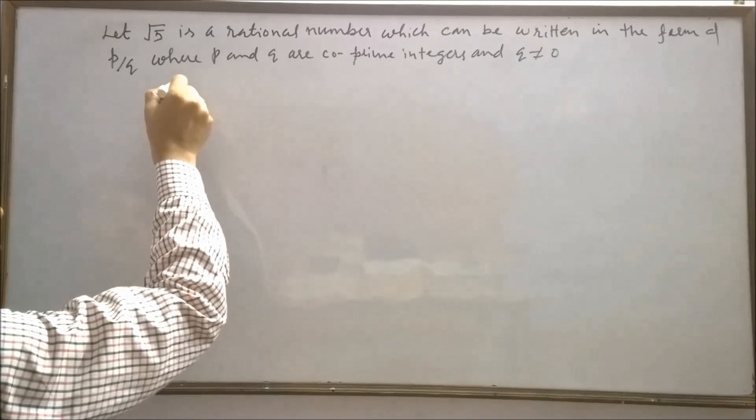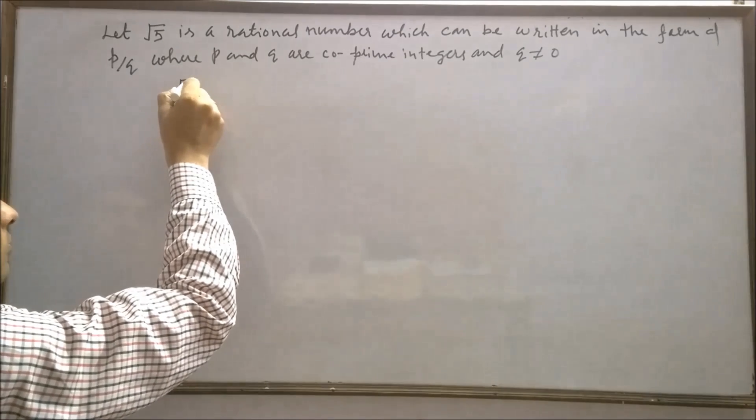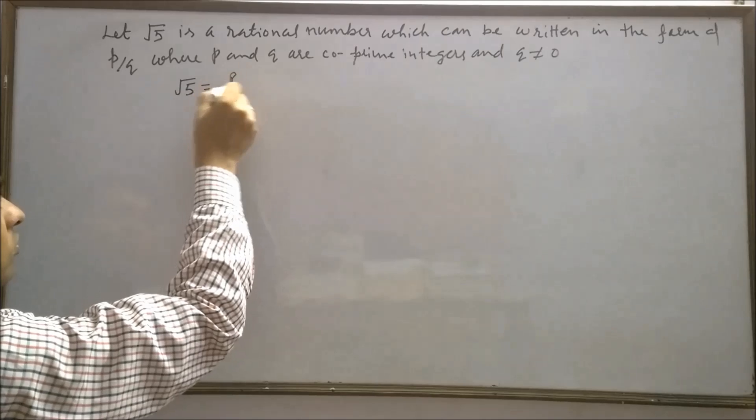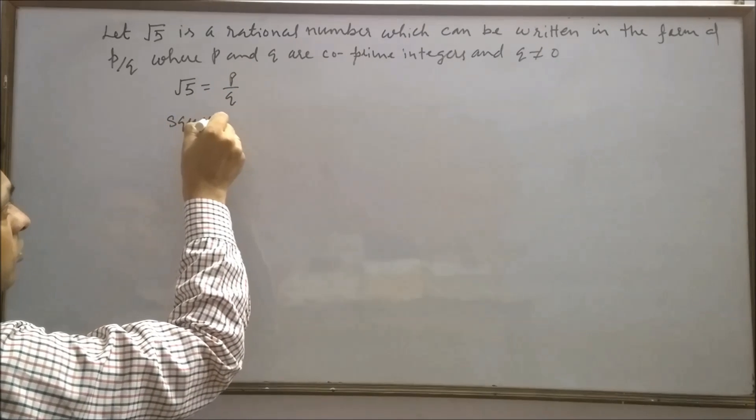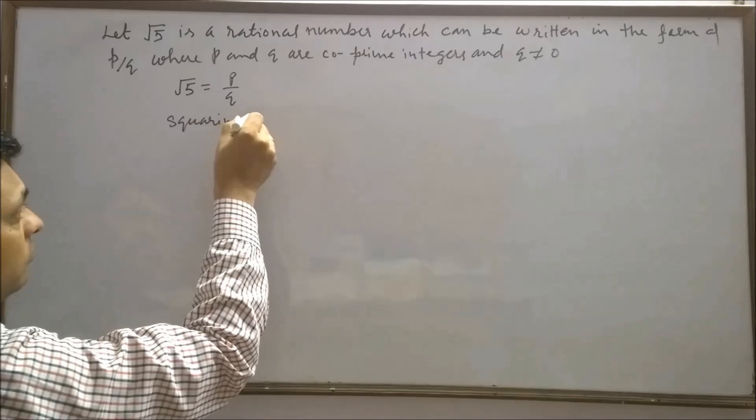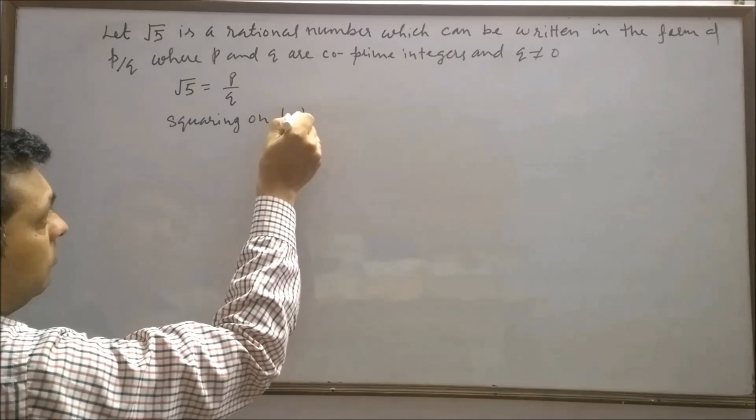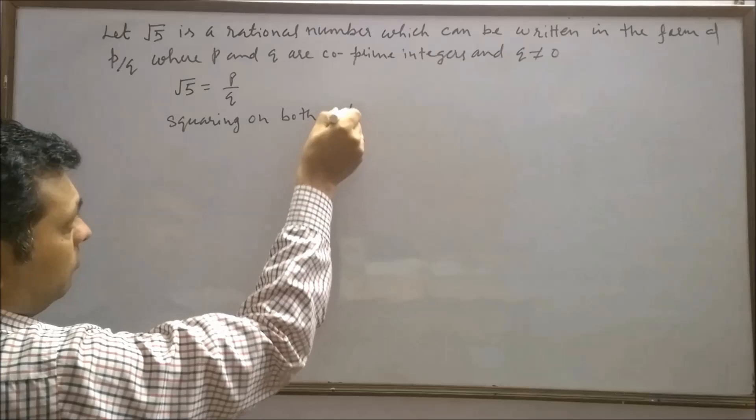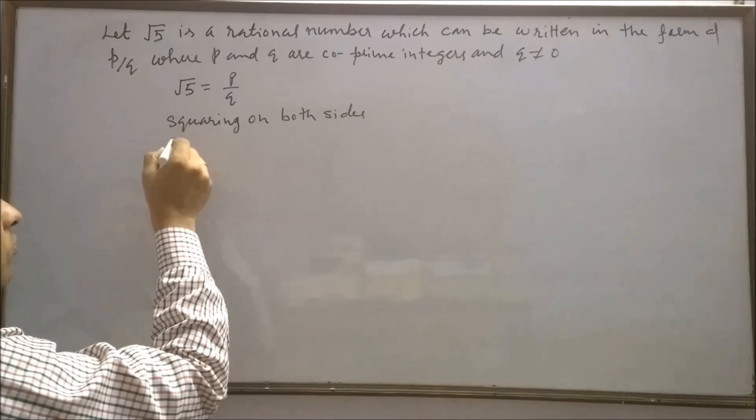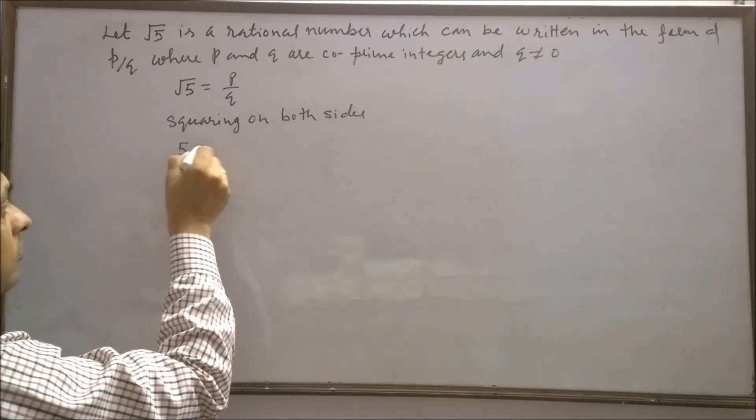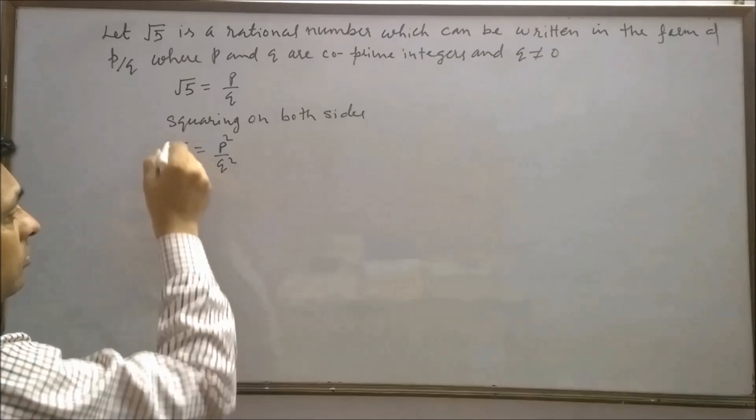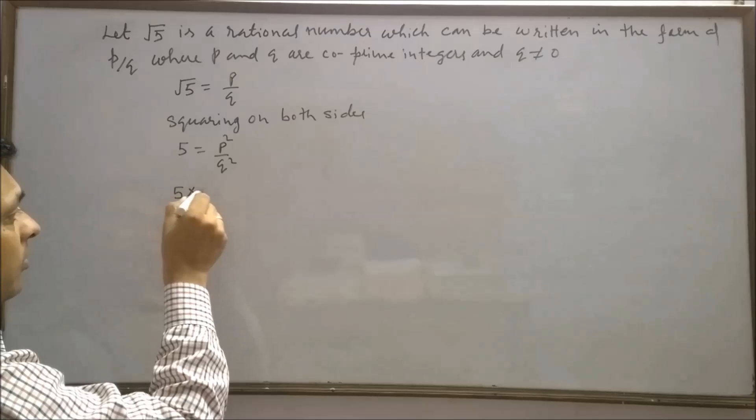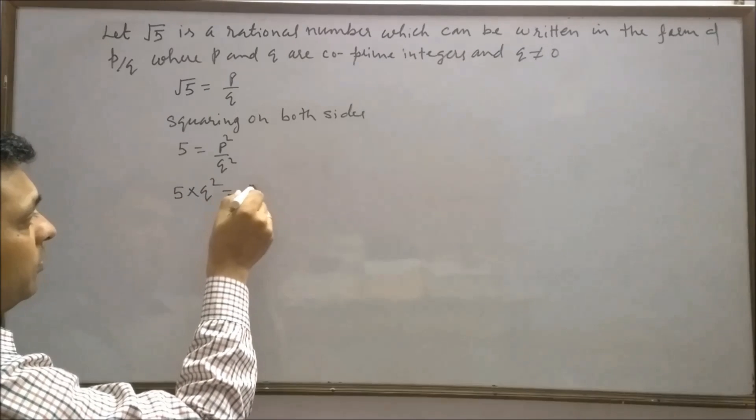So root 5 will equal to p upon q. Squaring on both sides, square of root 5 is 5, equals p square upon q square. Now cross multiplying, 5 into q square is equals to p square.